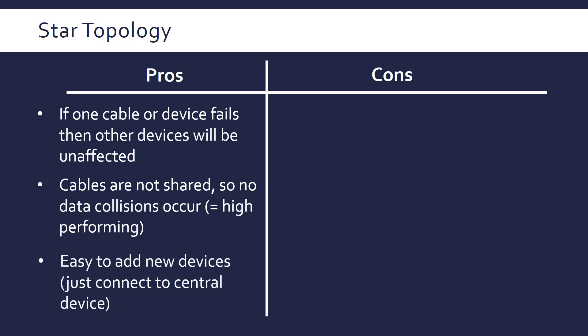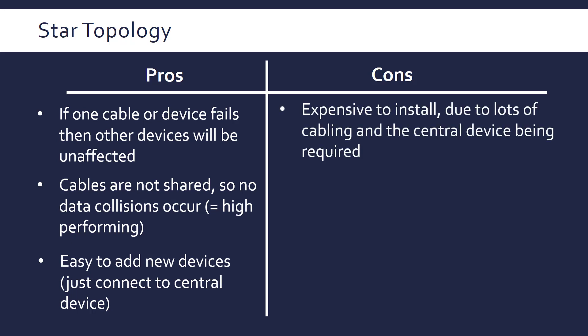In terms of making the network bigger and extending it, to add a new device is relatively easy — you just have to connect to the central node and you'll be up and running. On the negative side, the topology is said to be quite expensive to install. It does need quite a lot of cabling. You still need an individual wire going to each device, so there's not really much sharing of wires, so it could be more efficient.